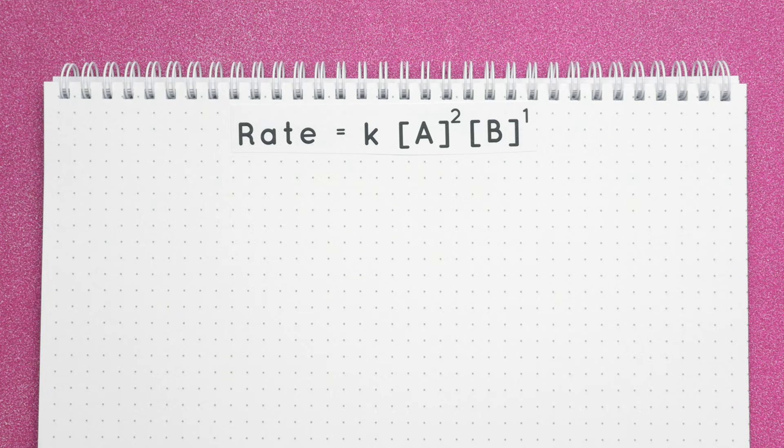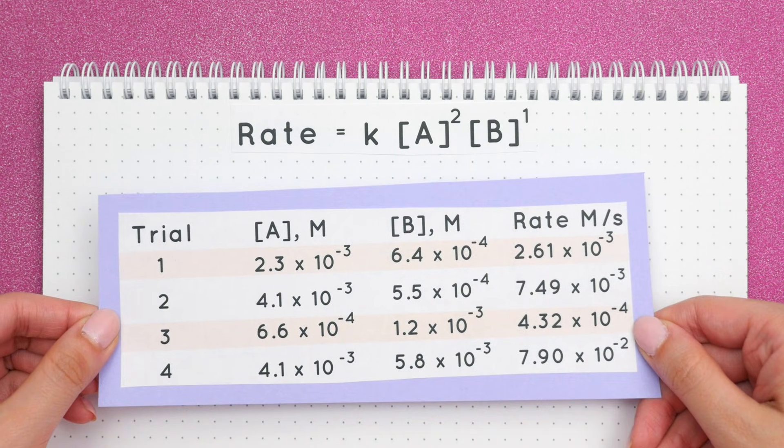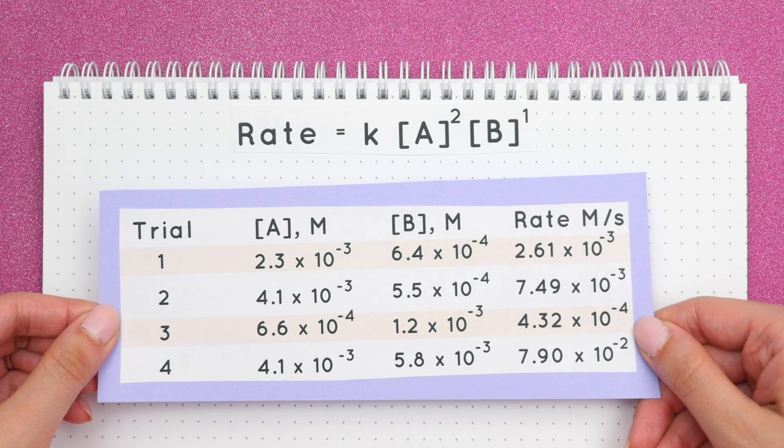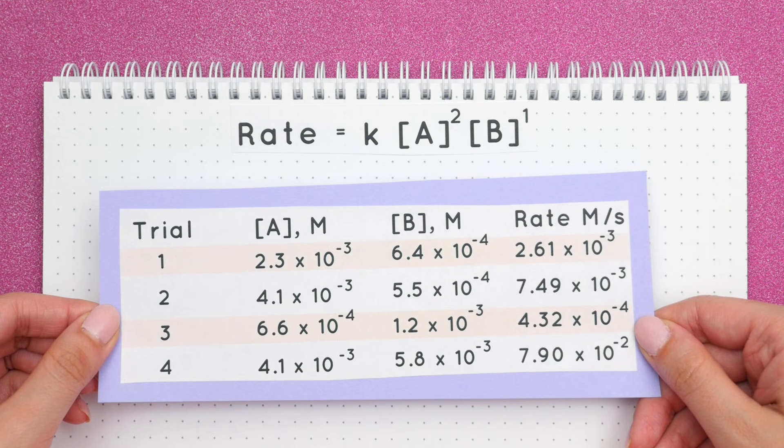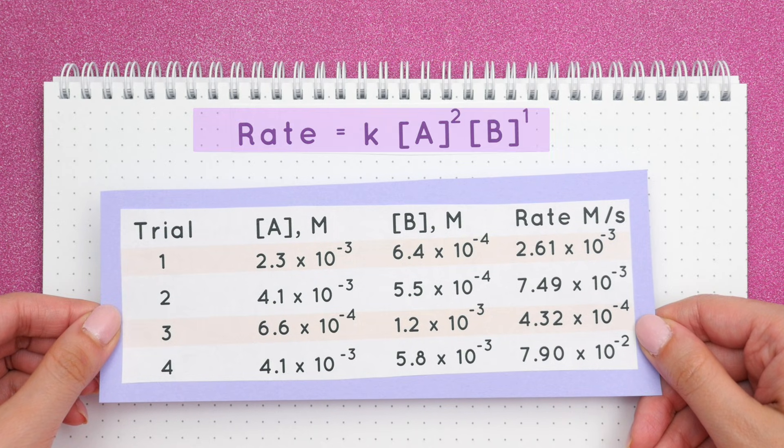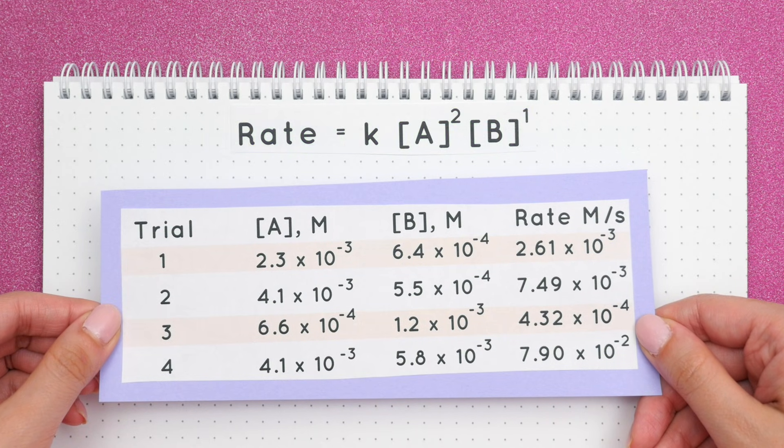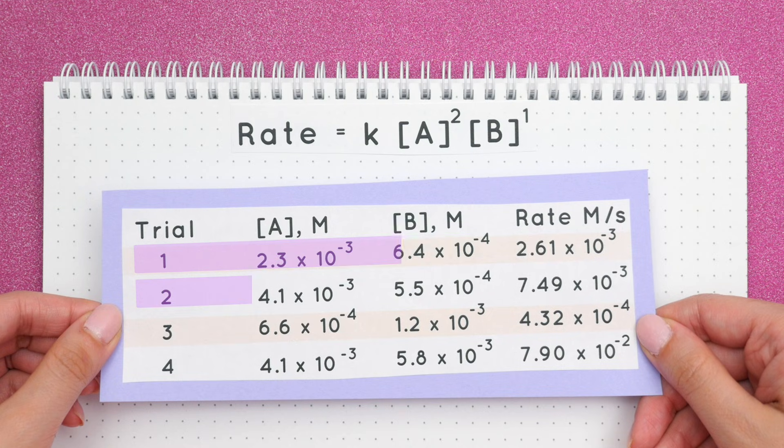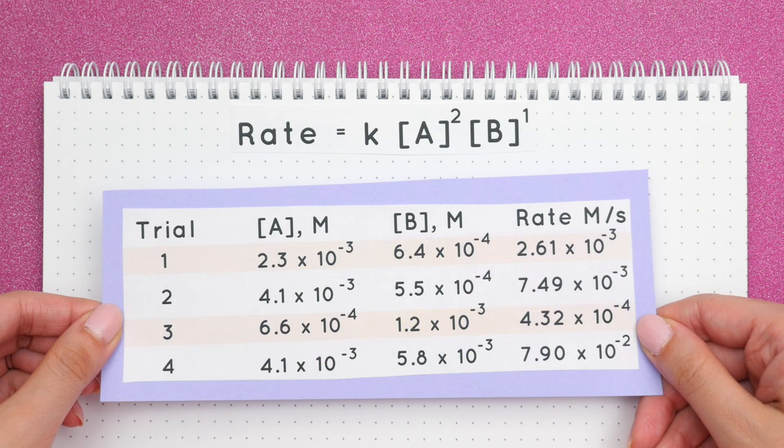Finding k is a little bit different in this problem because our table doesn't have a pattern and all the numbers are different. We must find the k value for each trial and then take the average. So using our rate law that we just found, we will plug in the values for every single trial and solve for k.